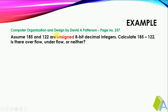Now I am going to discuss some exercise problems from Computer Organization and Design by David A. Patterson. This problem is taken from a specific page as an exercise. In this example, we have to perform subtraction of 195 and 122, given as unsigned 8-bit decimal integers. We have to find the result and check whether there is overflow, underflow, or neither.